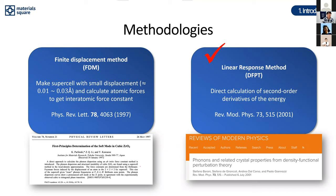In phonon calculations there are two methodologies. The first is the finite displacement method, which creates a supercell with a small atomic displacement, calculates atomic forces, and builds an interatomic force constant to describe vibrational properties. The second is the linear response method, called DFPT — density functional perturbation theory — which is a direct calculation of the second-order derivative of the energy. Both methods should yield equivalent results.